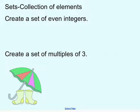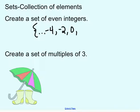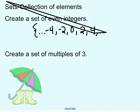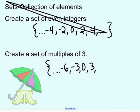If we are asked to create a set of even integers, we might say something like this, always using these curly braces. If we're talking about even, we can have both negative and positive even integers: negative 4, negative 2, 0, 2, 4. Always showing a pattern so that we could continue it onto infinity. Similarly, with multiples of 3 we could write dot dot dot, negative 6, negative 3, 0, 3, 6, and so on. You need to show the pattern so that we can say we have all of the multiples of 3 in the set.